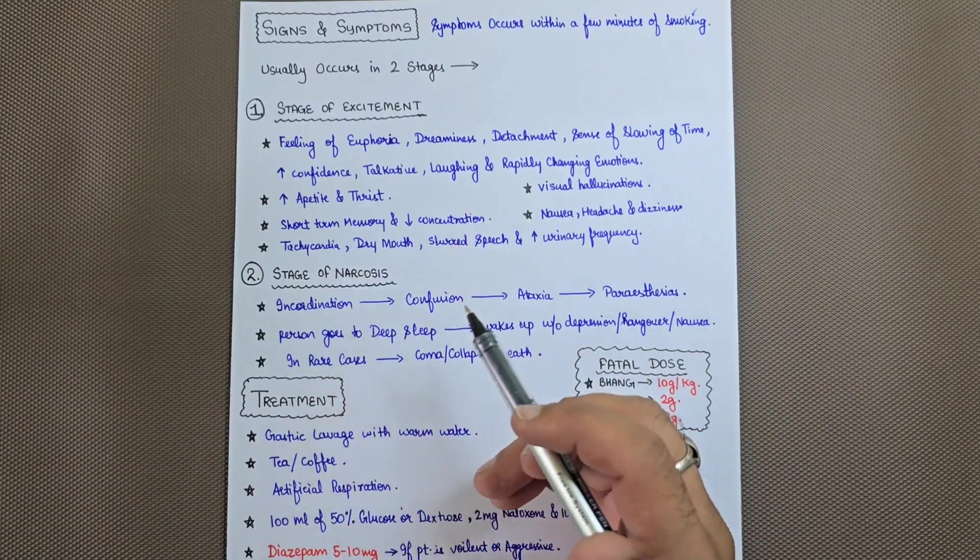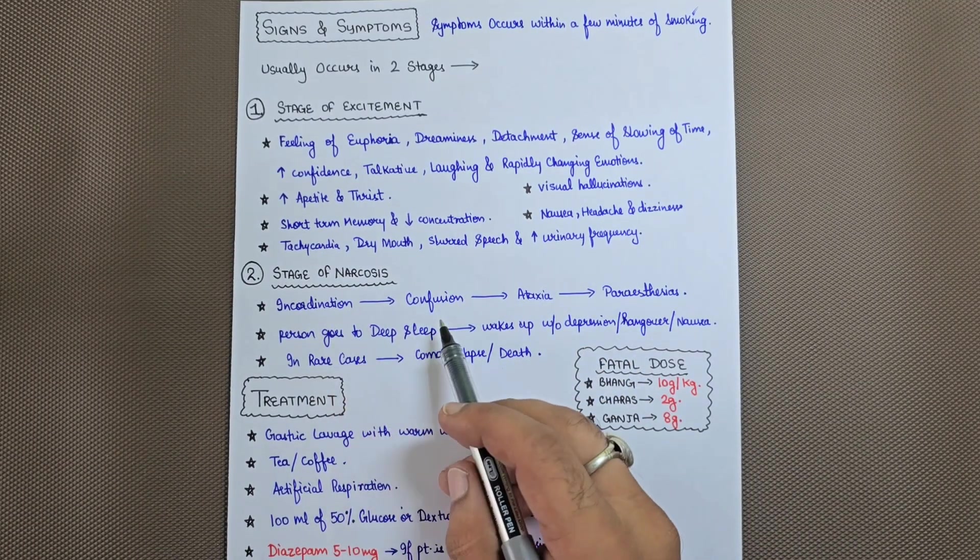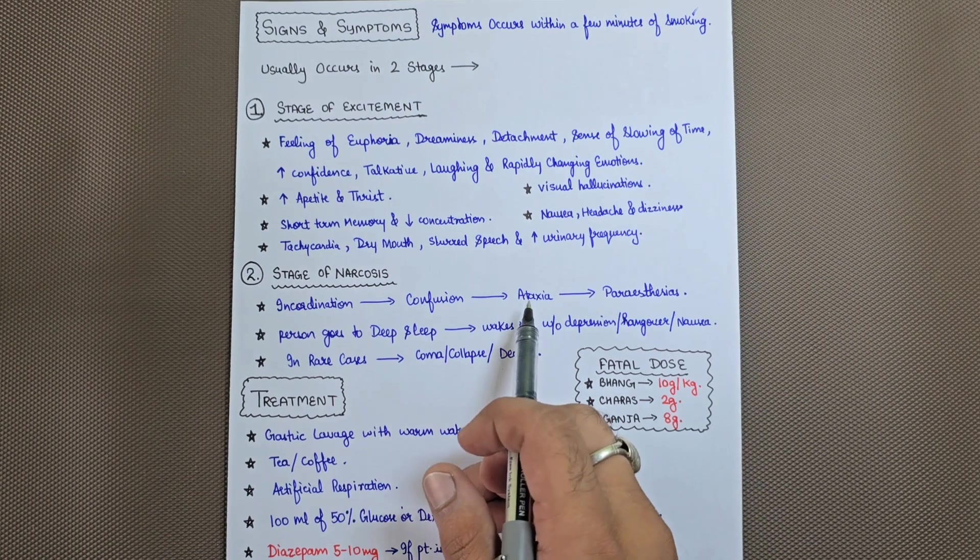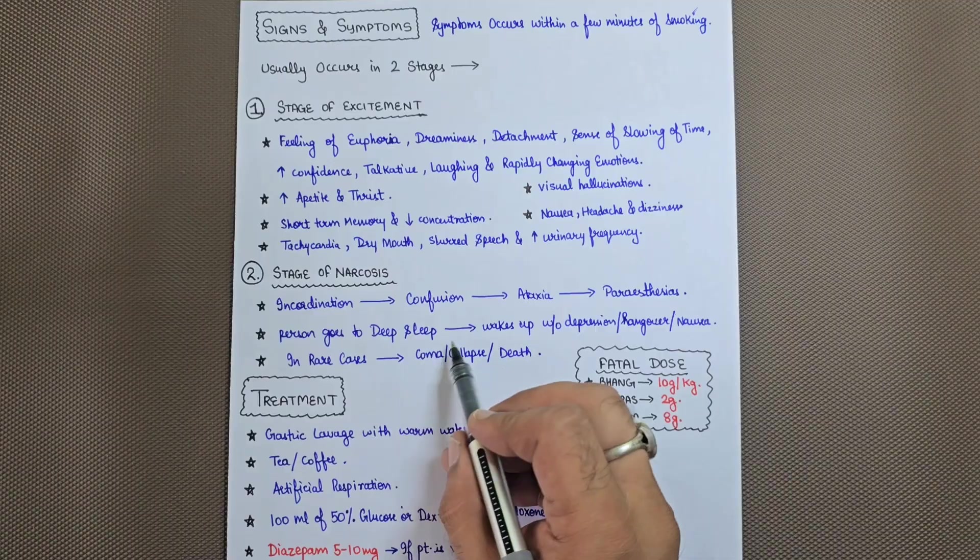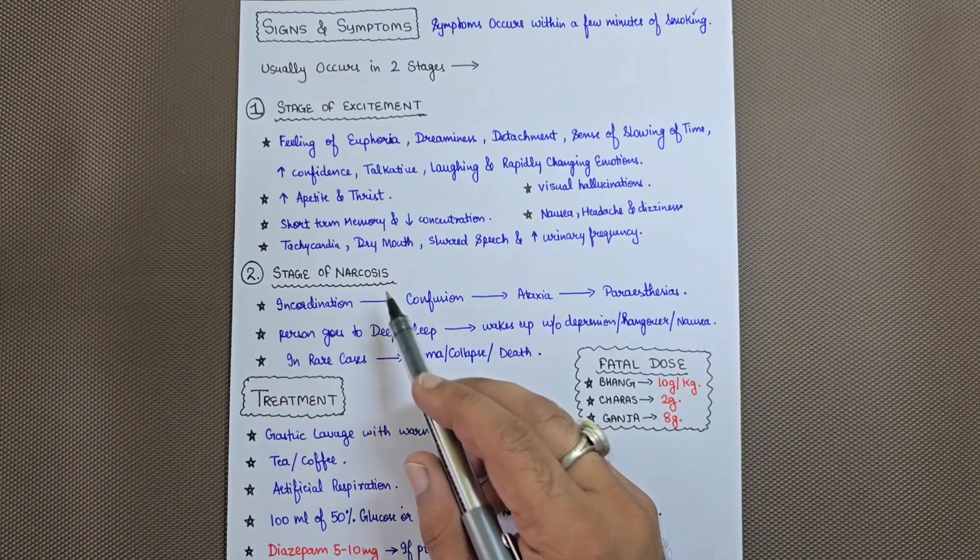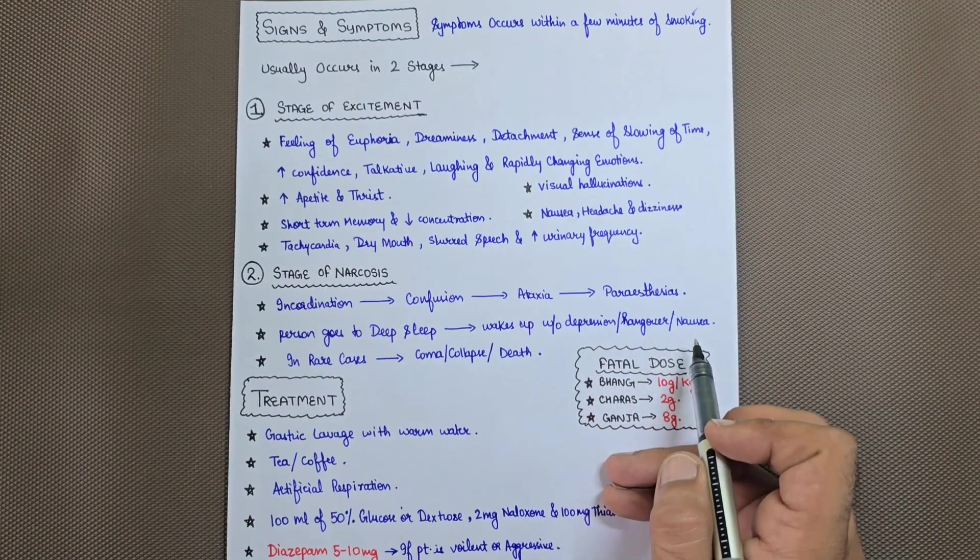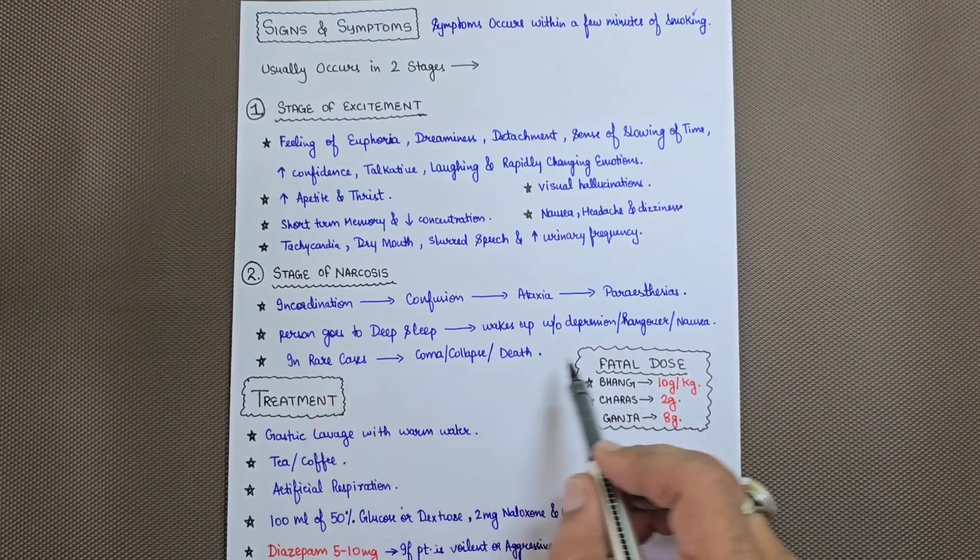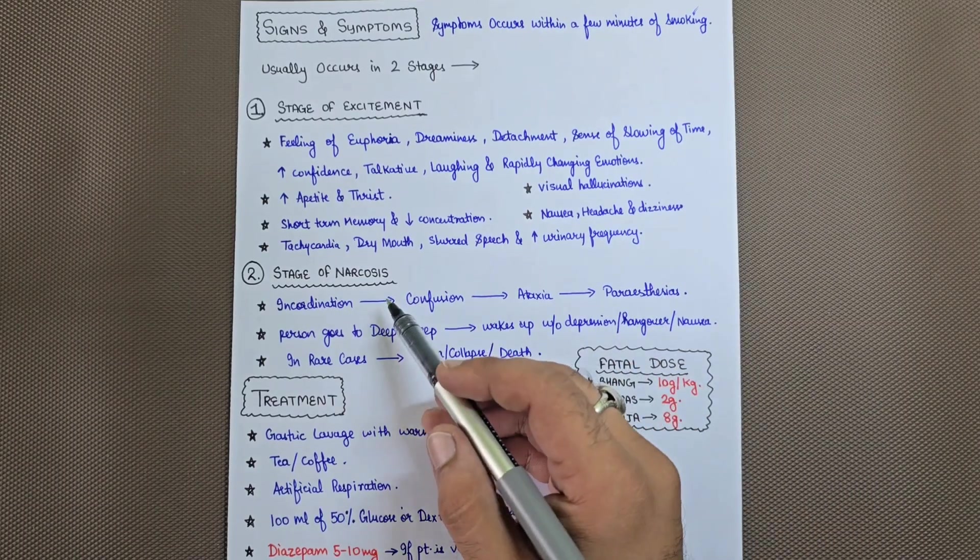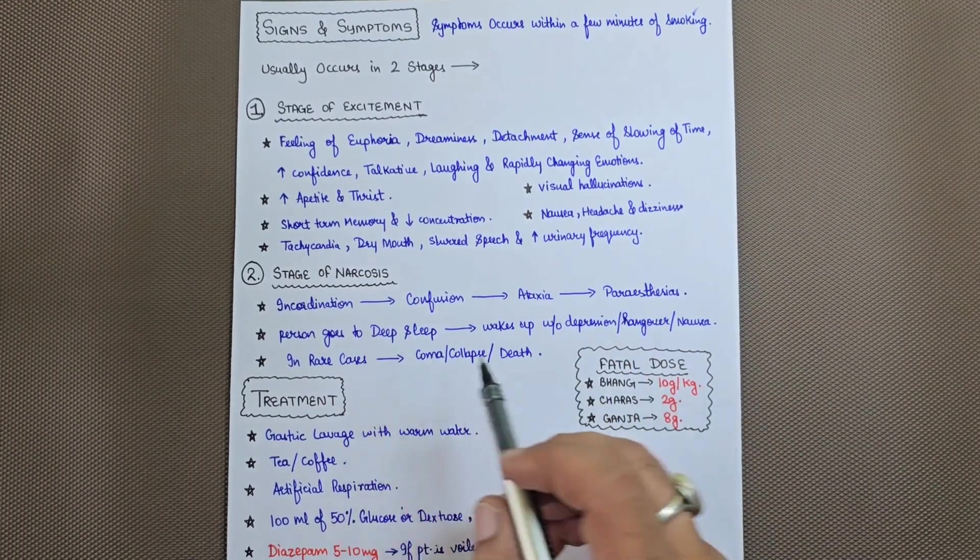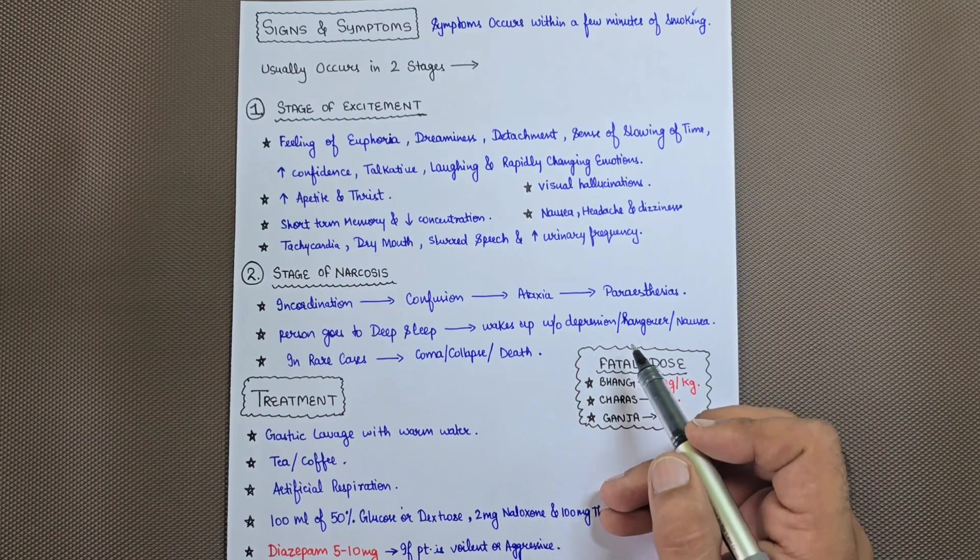The second stage is stage of narcosis. In this stage, there will be incoordination, confusion, ataxia, and ultimately it will lead to paresthesia. The person will go to deep sleep and wake up without depression, hangover, or nausea. After consuming so much cannabis, the patient will go to deep sleep and wake up without any signs of depression, hangover, or nausea.